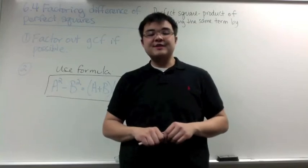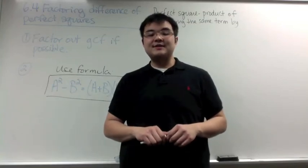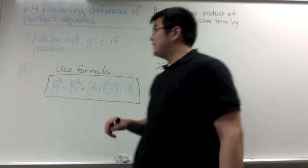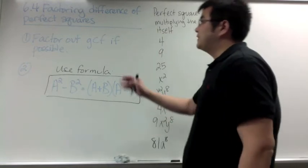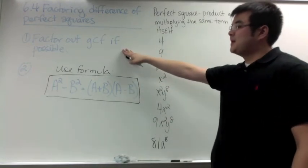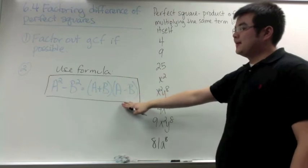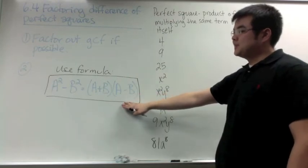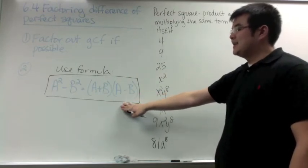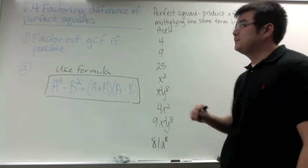These are the notes for section 6.4, factoring difference of perfect squares. We have two steps to factor the difference of perfect squares: factor out the GCF if possible, and then use the formula a squared minus b squared equals the quantity a plus b times the quantity a minus b.